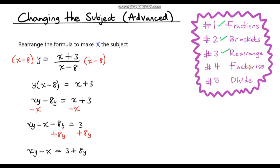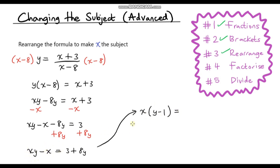The next step is to factorise. At the moment we've got two instances of x, and the whole reason we factorise is just to get one instance of x. So we can factor out an x from this expression. xy divided by x is just y, and then minus x divided by x is just 1. You can check this — if you expand the brackets you should get back to the original expression. On the right hand side we've got 3 plus 8y. So we've gone from two instances of x to one — that's the whole reason why we factorise.